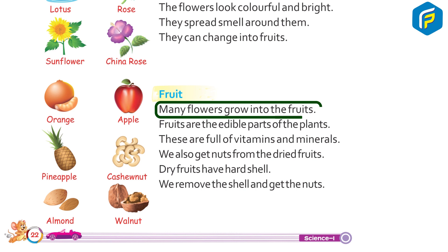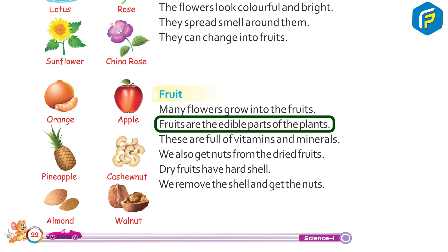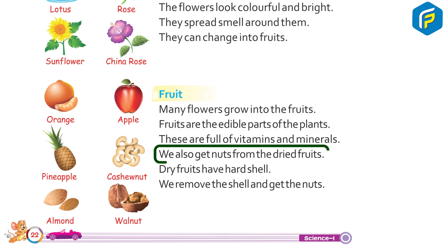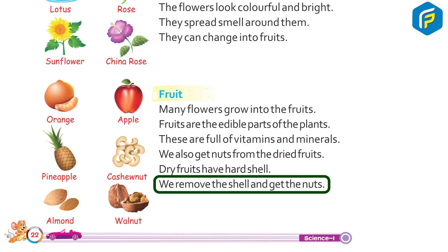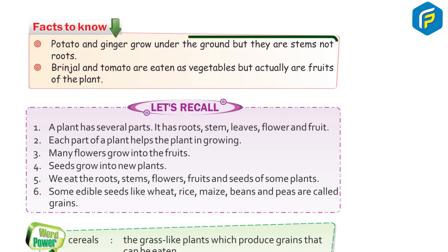Fruit. Many flowers grow into fruits. Fruits are the edible parts of the plant. These are full of vitamins and minerals. We also get nuts from ripe fruits. Dry fruits have a hard shell — we remove the shell to get the nuts.